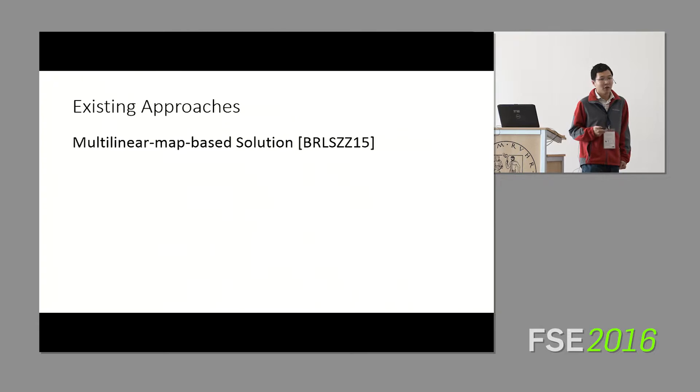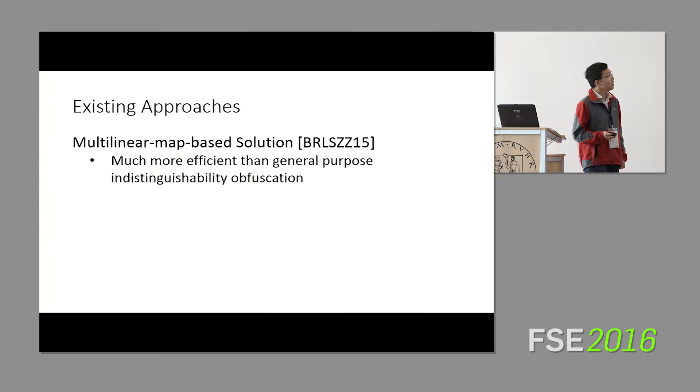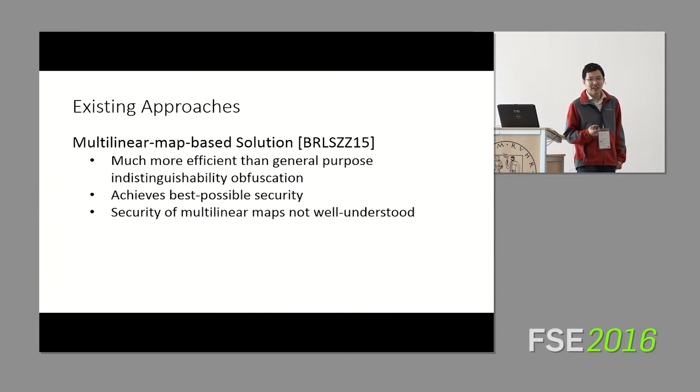More recently, in Eurocrypt of last year, Bonnet et al. developed a new solution for order-revealing encryption that did not rely on indistinguishability obfuscation, but relied on another very powerful cryptographic primitive called multilinear maps. I'm not going to go into the details here, but this was much more efficient than general purpose IO, and it achieves the best possible security. But unfortunately, one, the security of multilinear maps is not currently very well understood.